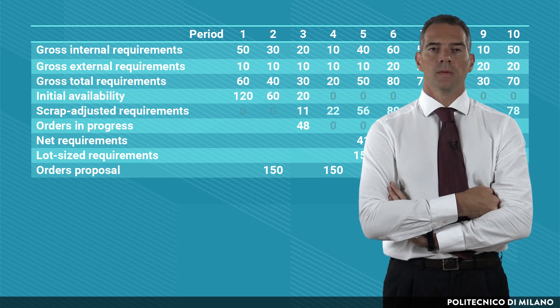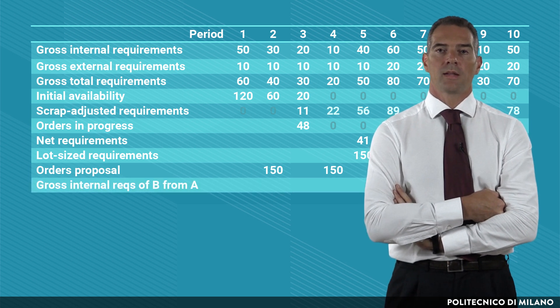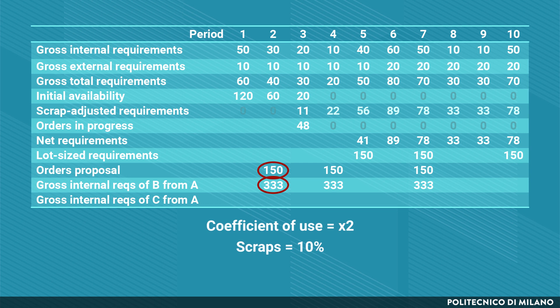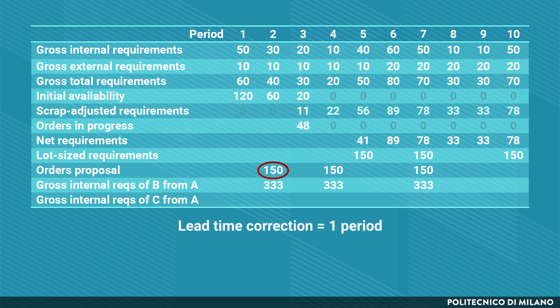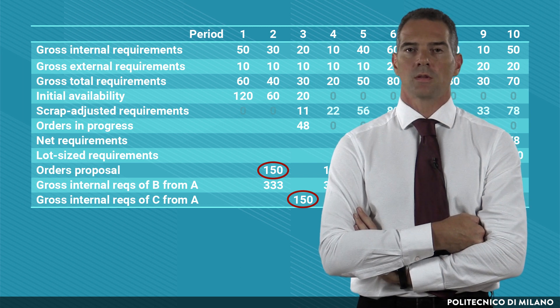Starting from the production orders for component A, we now explore the bill of material to compute the gross internal requirements for items B and C. For example, a requirement of 150 for item A becomes a requirement of 333 for item B, because of the coefficient of utilization of 2 (150 × 2 = 300) plus 10% assembly scrap. For item C, a lead time correction of one period applies, so a demand of 150 in period 2 becomes a gross requirement of 150 for C in period 3. This procedure is then applied across the entire bill of material, producing the full materials requirement plan.